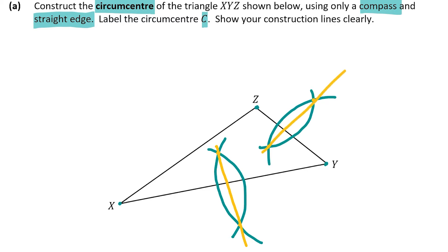Continue that line until it hits the other perpendicular bisector. The point where they intersect is point C — that's your circumcenter, and that question is done. You get 15 marks for this question, which is a lot. Construction questions carry a lot of marks, so I'd highly recommend having your constructions off the top of your head and practising them at home.